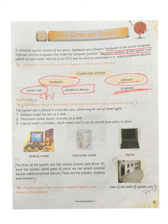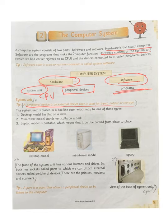A peripheral device is an external device used for input, output, or storage. It is used for one of three purposes: to give input to the computer (for example, a keyboard for typing), to give output (for example, a monitor to see results or a printer for printouts), or for storage (for example, a pen drive to store data). All of these are peripheral devices.